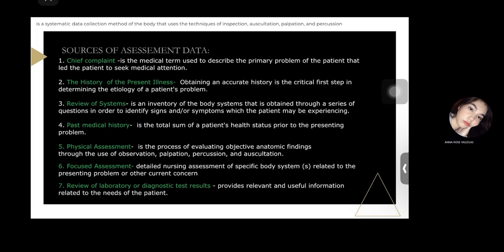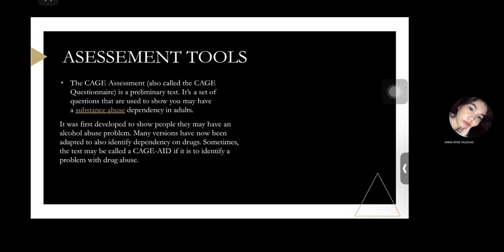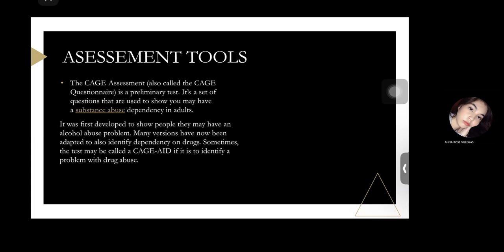To support our assessment, there are tools nurses can use. Number one is the CAGE questionnaire or CAGE assessment. It is a preliminary test — a set of questions used to identify if a person has substance abuse dependence in adults. It was first developed to identify people who may have an alcohol abuse problem, but many versions have now been adapted to also identify dependency on drugs. The test may be called CAGE-AID if it is used to identify a problem with drug abuse.